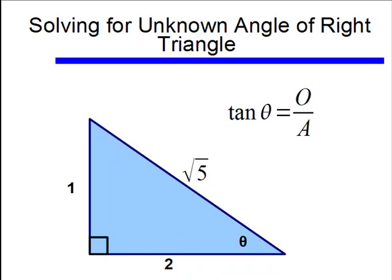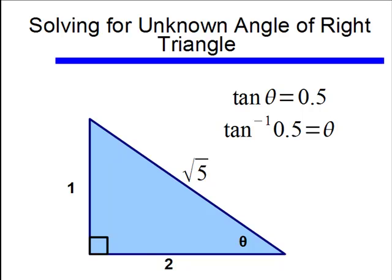Now instead of the question mark I replace that with theta. So tangent is equal to opposite over adjacent, or in this case 1 over 2, so I need to find what angle gives me a tangent of 1 half, or 5 tenths, and to do that I'm going to use my inverse trig function. I'll say the inverse tangent of 0.5 should give me an angle that would give me a tangent of 0.5.